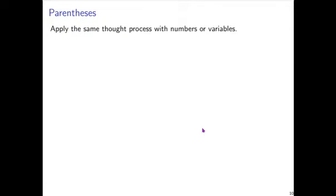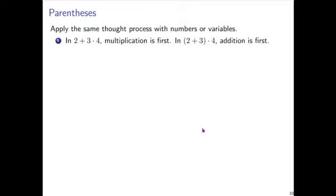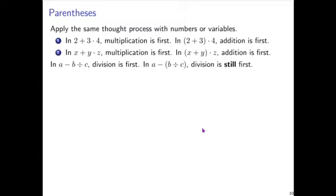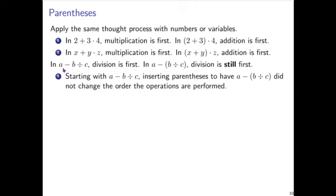The same thought process should apply whether you have numbers or variables. In 2 plus 3 times 4, multiplication is first. In (2 plus 3) times 4, addition is first. Similarly, in x plus y times z, multiplication is first; in (x plus y) times z, addition is first. In a minus b divided by c, division is first. And in a minus (b divided by c), division is still first — so nothing changed there. Inserting parentheses around b divided by c did not change the order the operations are performed in.